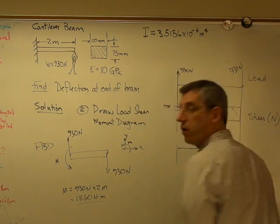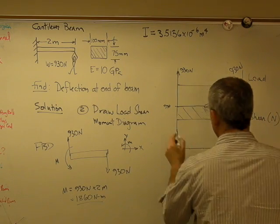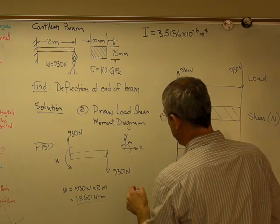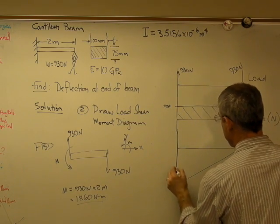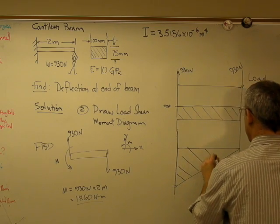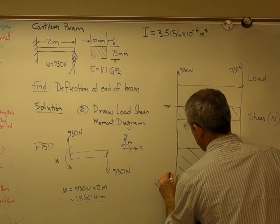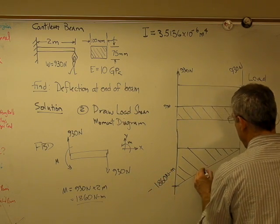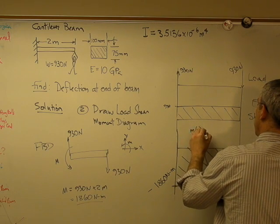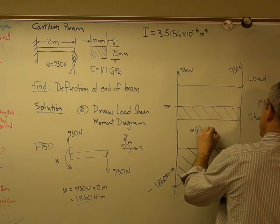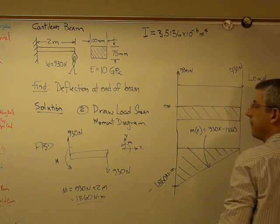So let's finish our load shear moment diagram now. Draw this in. Okay, so I'm going to go now to a negative moment here due to designer sign convention. And that's what this looks like. So that's 1,860 newton meters there, negative. And the equation for that line, which we'll need, is 930x minus 1,860.